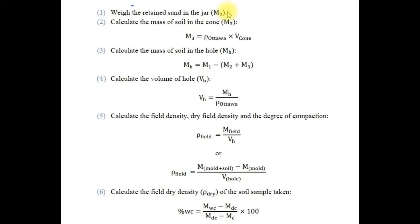For data analysis, let M2 be the sand retained in the jar. Calculate the mass of sand in the cone, M3, by multiplying the density of the calibrated sand by the volume of the cone. Then calculate the mass of sand in the hole, MH, which equals M1 (the total mass of sand in the jar) minus M3 (sand in the cone) minus M2 (sand remaining in the jar). The volume of the hole is then given by MH divided by the density of sand.